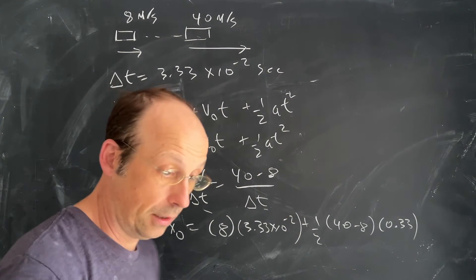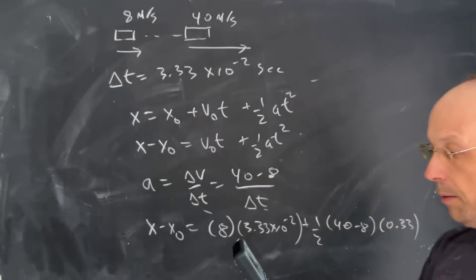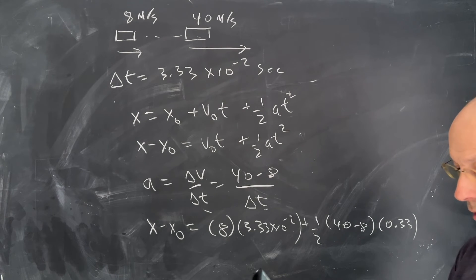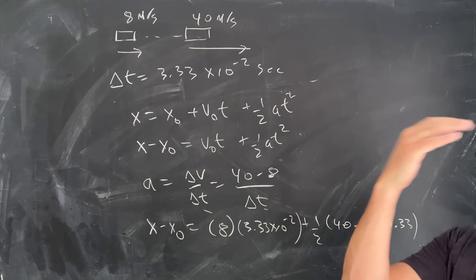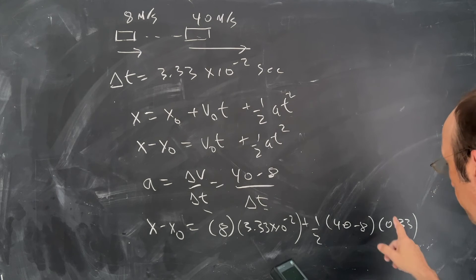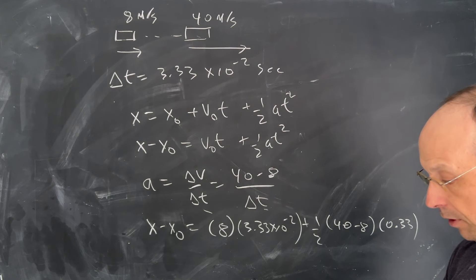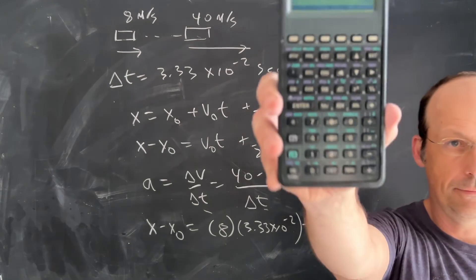Yep. Okay. And let's put this in our calculator. I already know the answer, but let's put it in our calculator anyway. So 8, enter, 3.33 times 10 to the negative 2 times 0.5 for a half, enter, 40 minus 8 is 32. I'm just going to do that part in my head. 32 times, oh, that's 0.33, I'm going to, 0.333 times 10 to the negative 2 times plus, same thing.